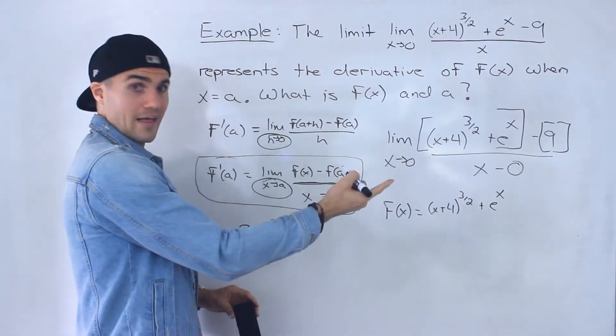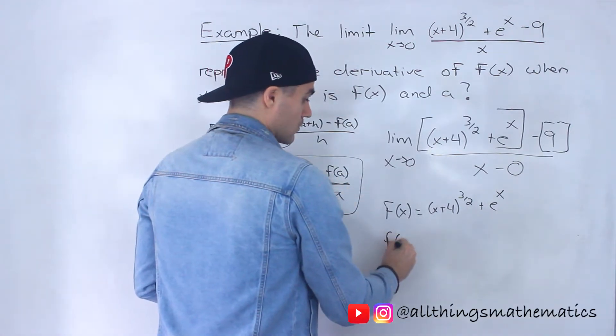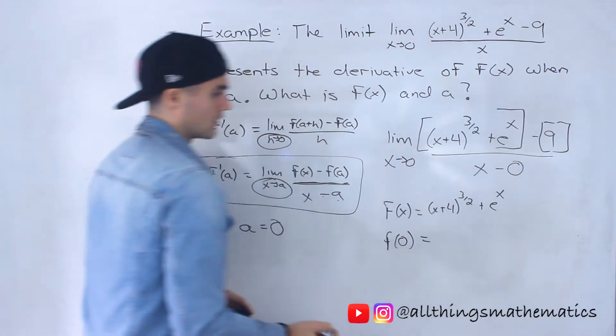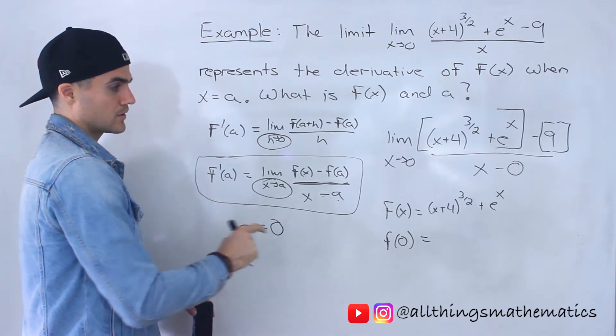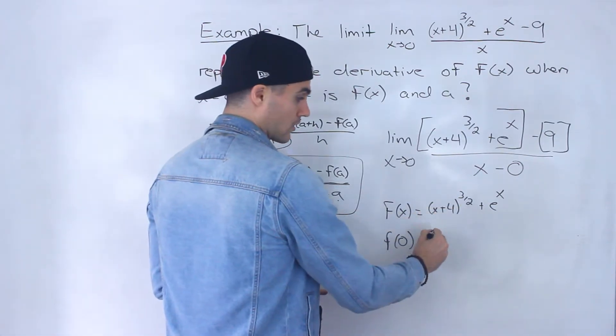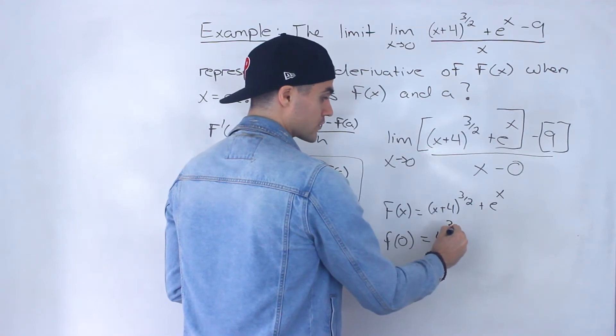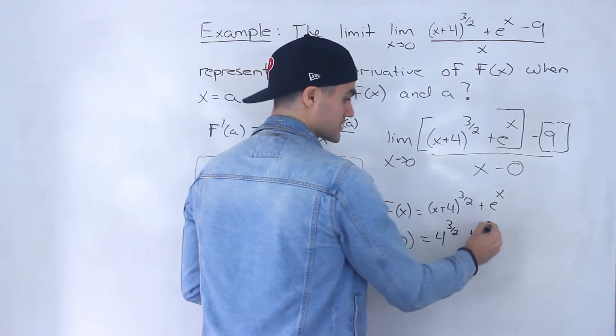What's f(0) going to be? Well f(0) is going to be 0+4, so 4 to the power of 3/2 plus e to the power of 0.